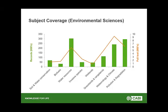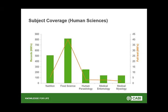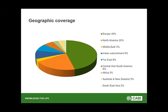Food sciences covers food chemistry, production, safety, obesity, and so on. Human sciences includes tourism, and we really focus a lot on eco-tourism and sustainable tourism. We welcome good content from different parts of the world, though we still have large amounts coming from Europe and North America.